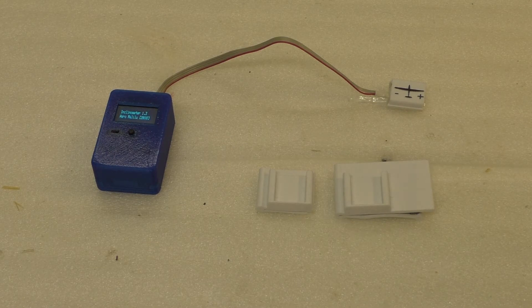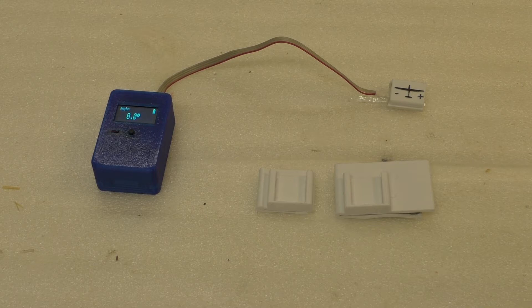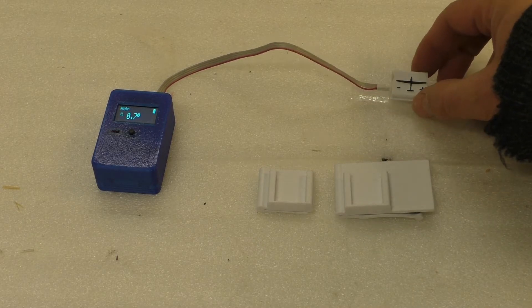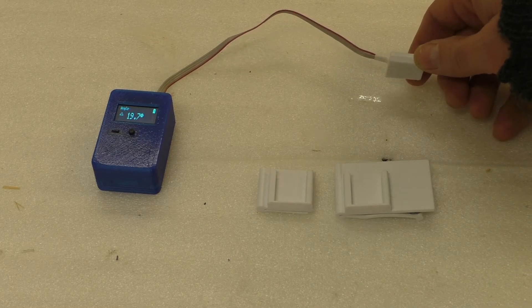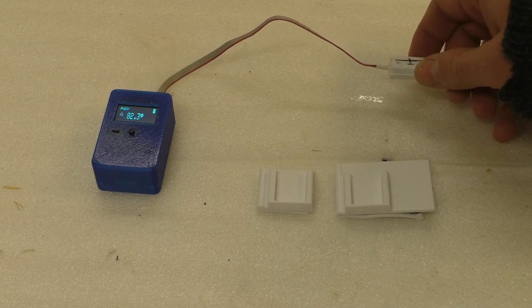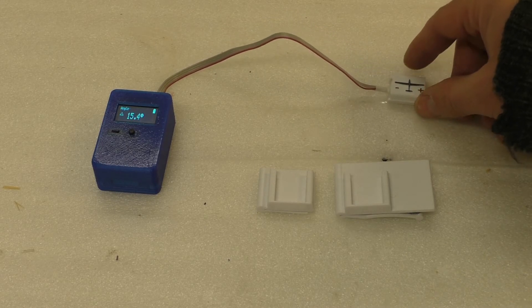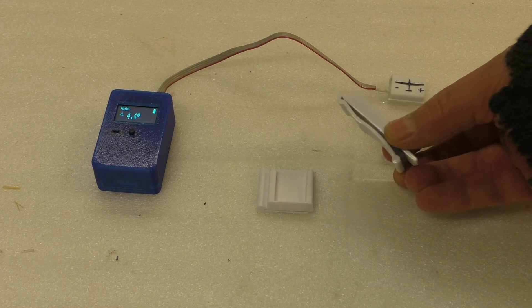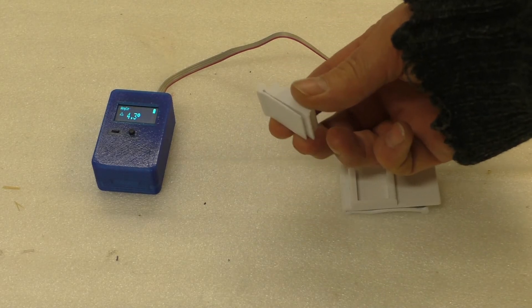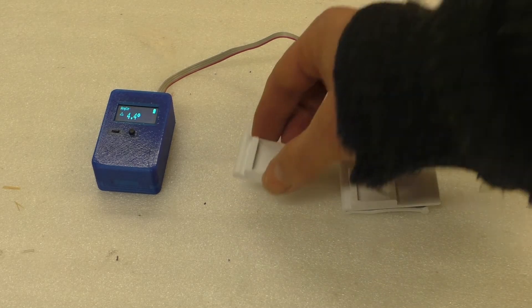Aero put together some very nice equipment to make for an electronic inclinometer with the sensor being able to do plus and minus 95 degrees with two adapters to clip on to larger or smaller control surfaces.